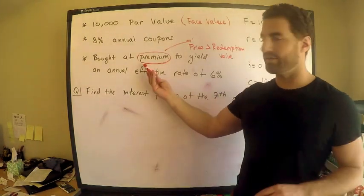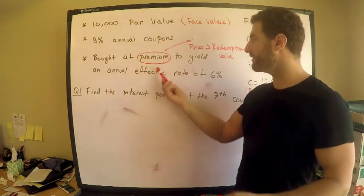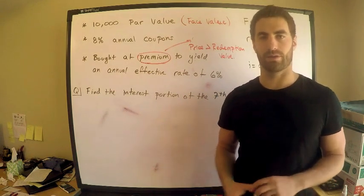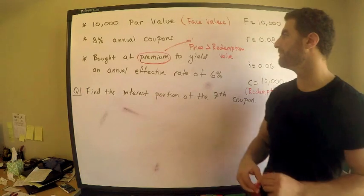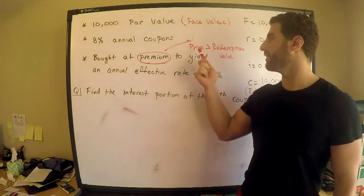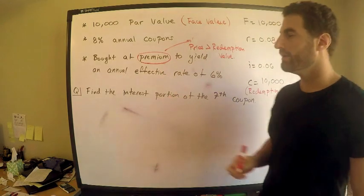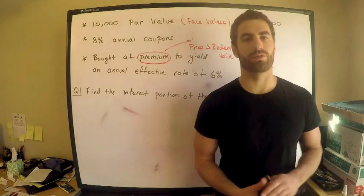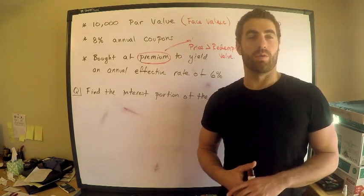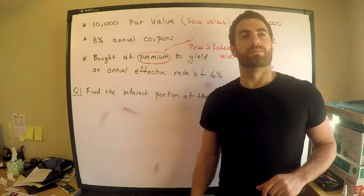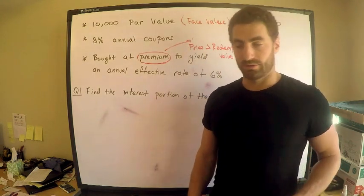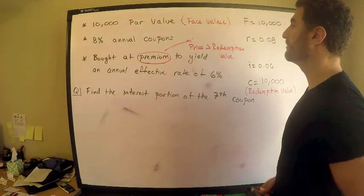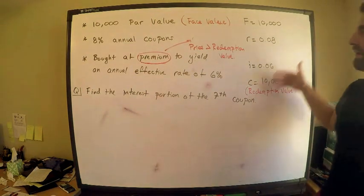By the way, they may also say a bond is bought at a discount. In that case, you're buying the bond for less than the redemption value — getting a discount on it. That discount is the difference between the redemption value and the price, so the inequality is switched. Anyway, let me get back to the question. I want to explain this in a way you can understand without prior knowledge, which is why I'm going into these details.